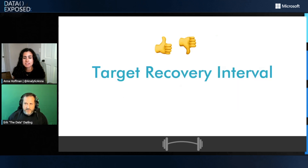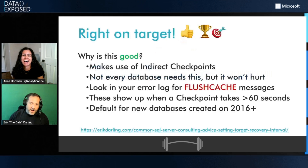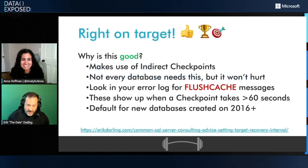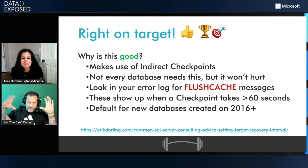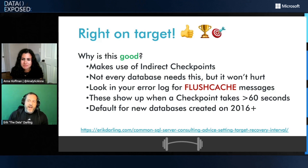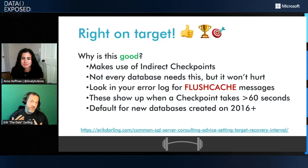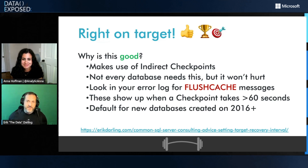Next is target recovery interval. For years I would look through people's error logs and see all these messages about flush cache, where SQL Server was spending 60 seconds or longer trying to write dirty pages from the buffer pool out to disk — either because they started a backup or something else forced a checkpoint. Changing target recovery interval to 60 seconds, if you're on SQL Server 2012 or better, works well. In SQL Server 2016 it became the default for new databases. Where you have to worry about it is on those big old legacy databases that you've been restoring around since 2005 or so.